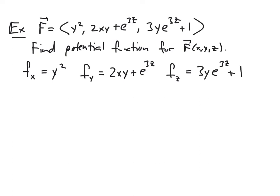We pick one partial and anti-differentiate. The simplest here is F_x = y². Anti-differentiating with respect to x gives f(x, y, z) = xy² + G(y, z), where G(y, z) is an arbitrary function of y and z — any such function differentiates to zero with respect to x. Now I differentiate this with respect to y: F_y = 2xy + G_y(y, z). Comparing with our known F_y = 2xy + e^(3z), we subtract 2xy from both sides and get G_y(y, z) = e^(3z).